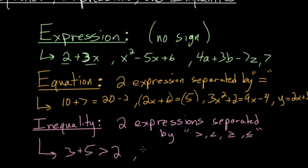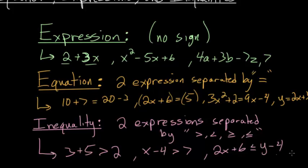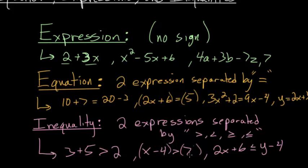Maybe you have something like x minus 4 is greater than 7. You can solve this for x to find that x is always bigger than 11. Maybe you have something like 2x plus 6 less than or equal to y minus 4 — now you have an inequality with two variables. Just like with equations, we can have as many variables as we want. We just know it's an inequality because you have an expression on both sides separated by some kind of inequality sign.